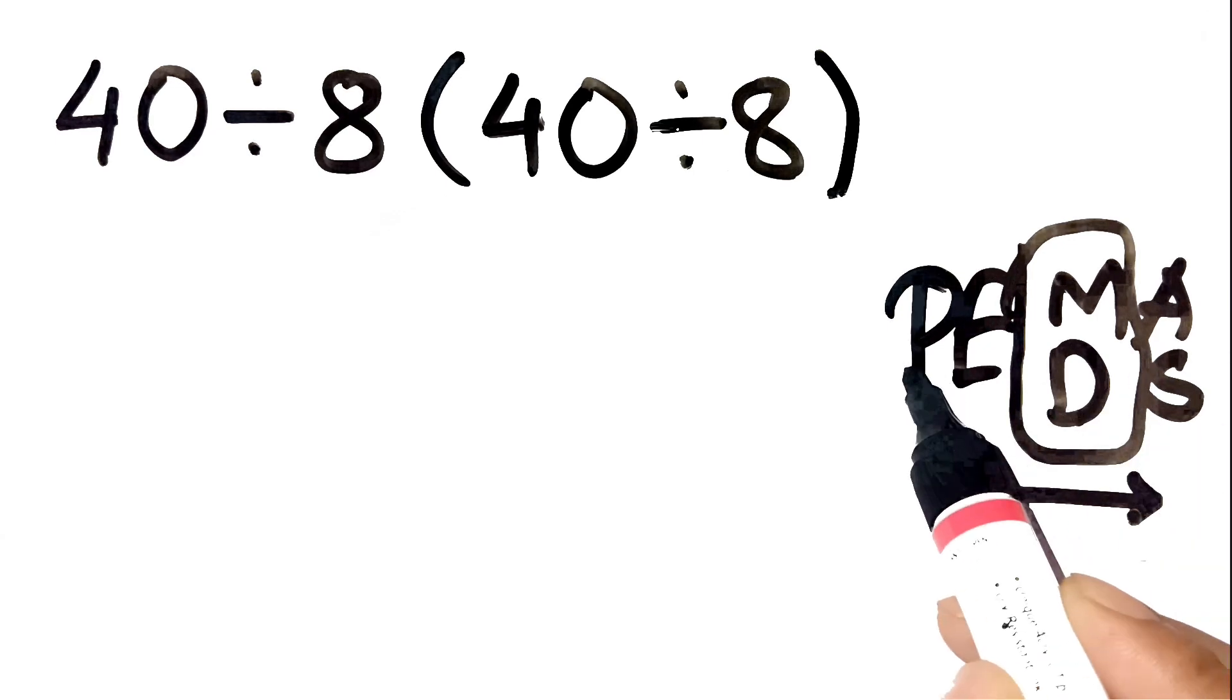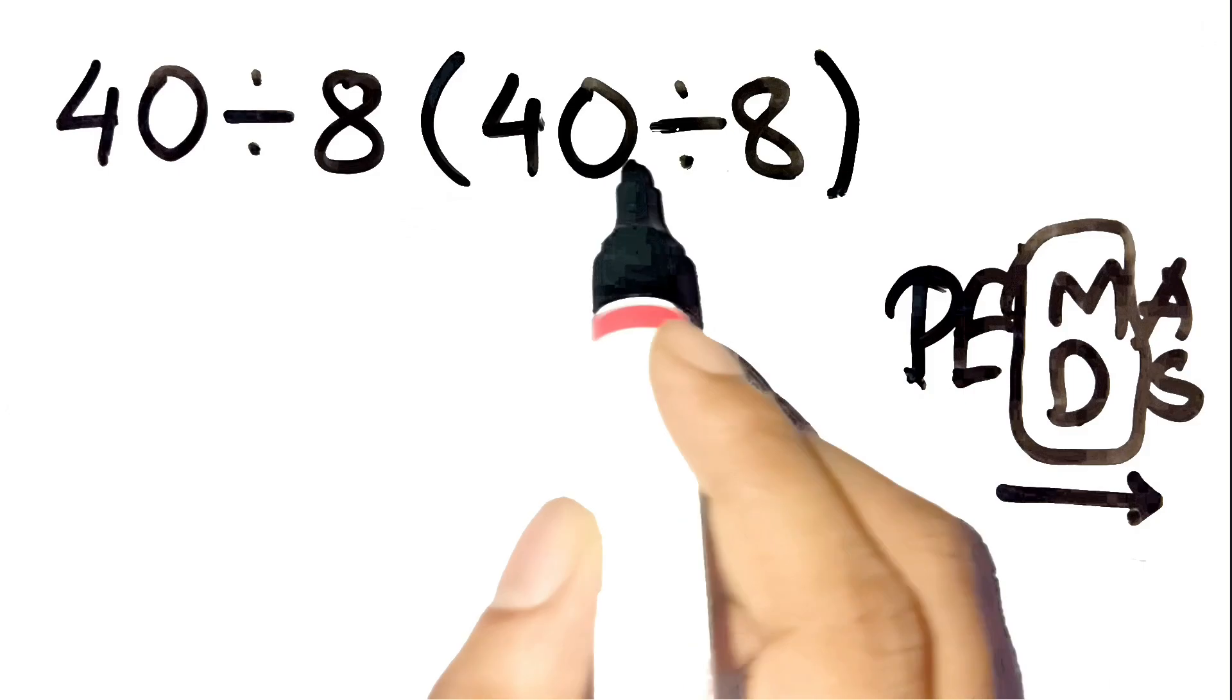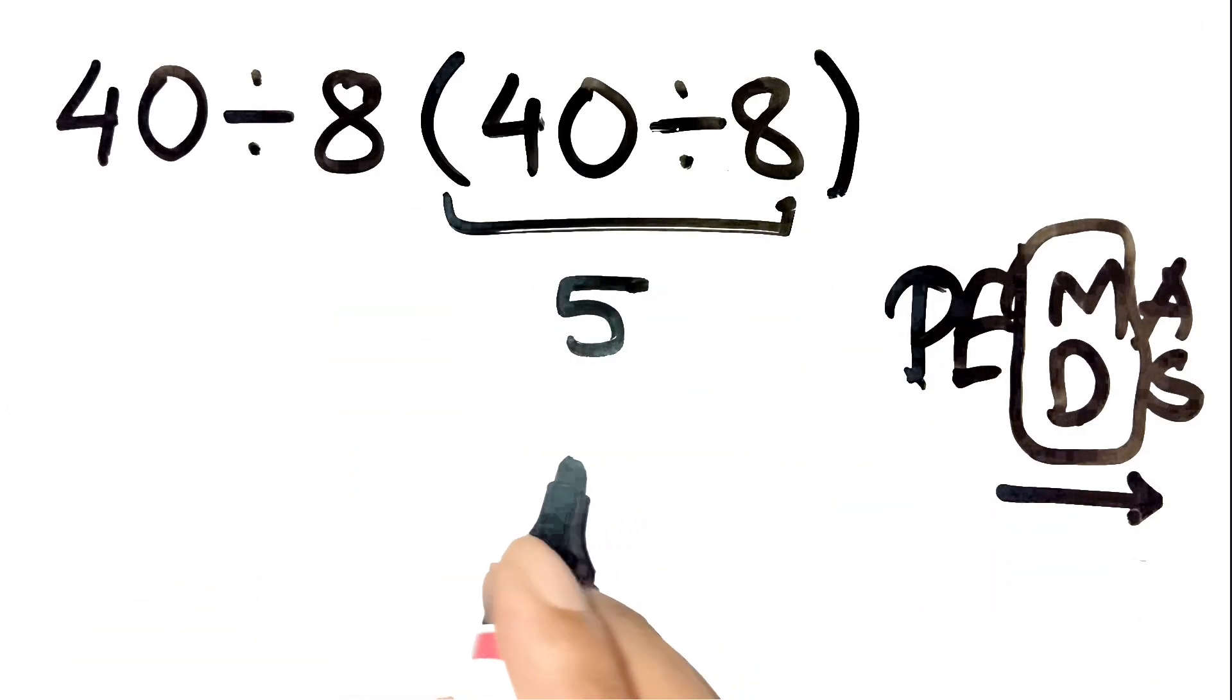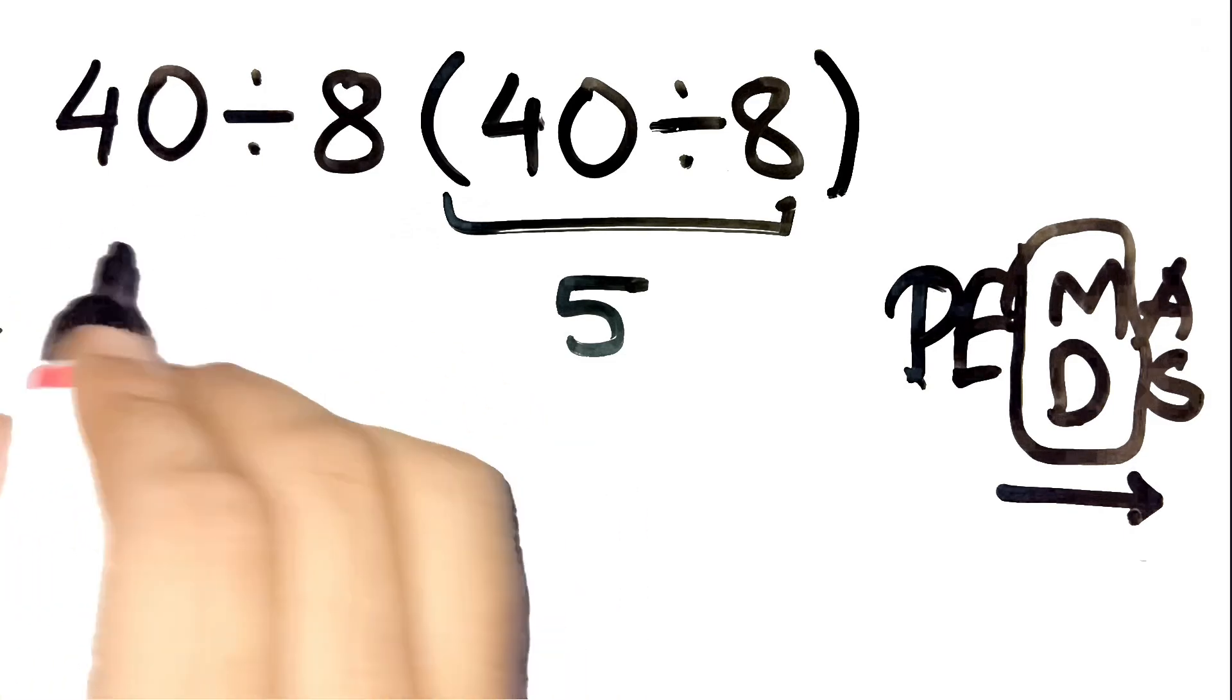Step 1. Solve the parentheses first. Inside the parentheses, 40 divided by 8 equals 5. Got it? Good. Now the equation looks like this. 40 divided by 8 times 5.